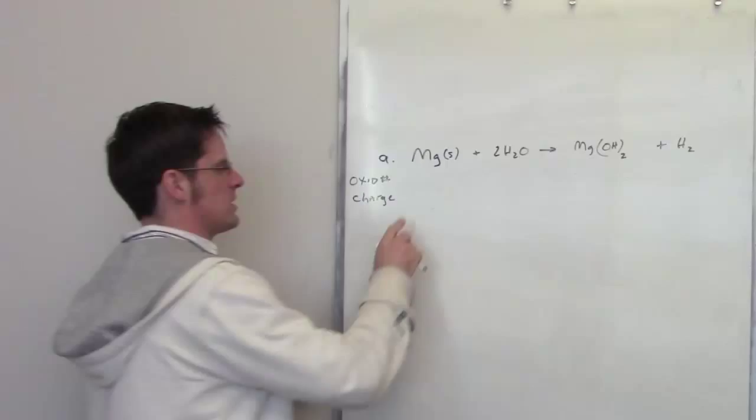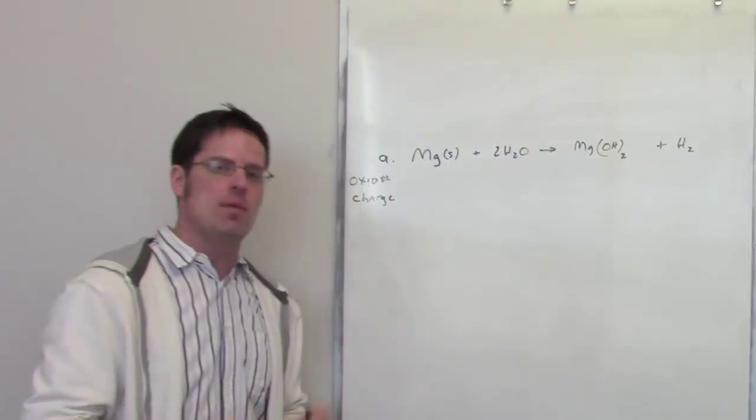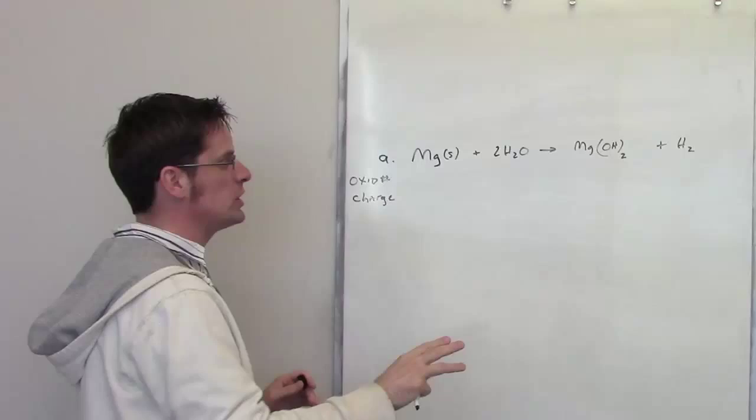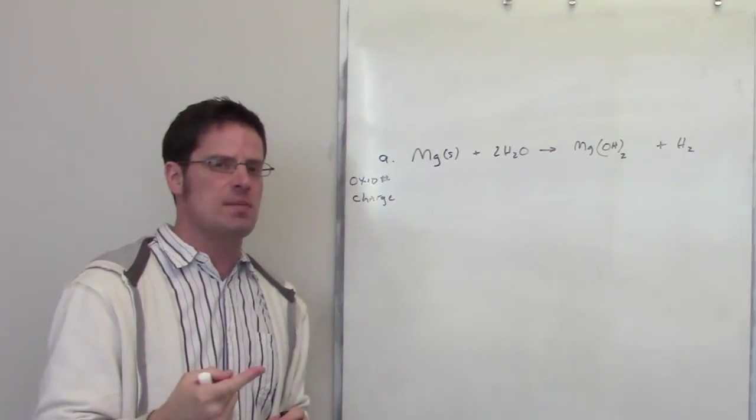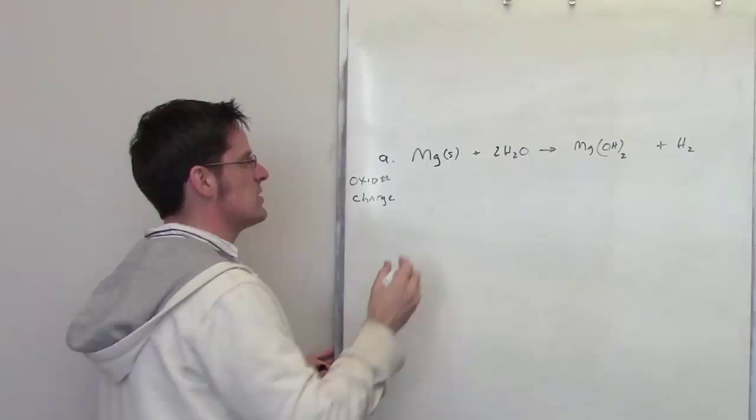We'll begin, of course, left to right. We've got magnesium. Magnesium all by itself, no charge. What is its oxidation number? Well, as I've outlined earlier, when you have that scenario, it is zero.